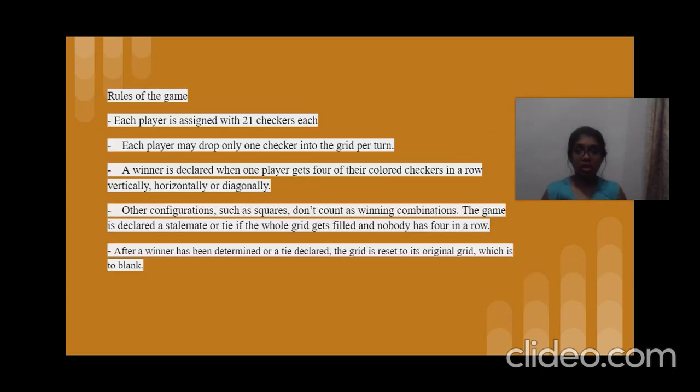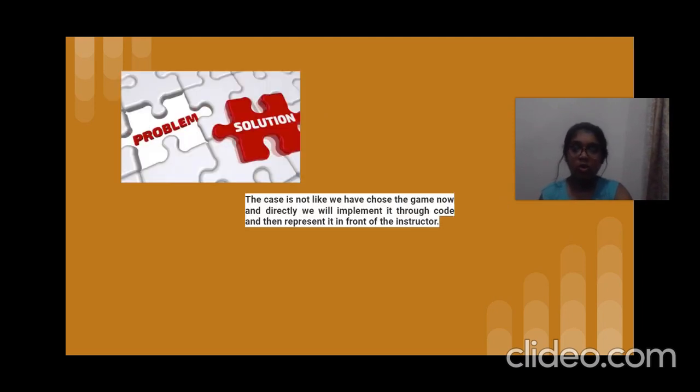The rules of the game are: each player is assigned 21 checkers and drops one coin per turn. A winner is declared if the player gets four checkers of his chosen color in a line, either horizontal, vertical, or diagonal. If none of them gets a winner and the whole board gets filled up, it's a draw. As soon as the winner is declared or the game is drawn, the grid is reset.